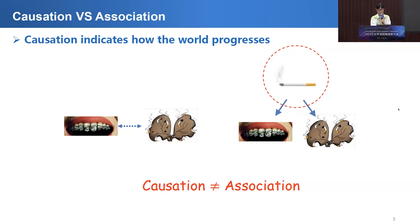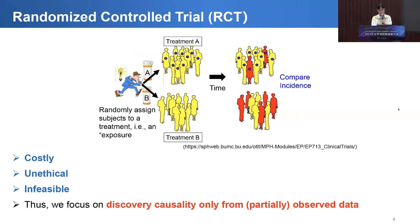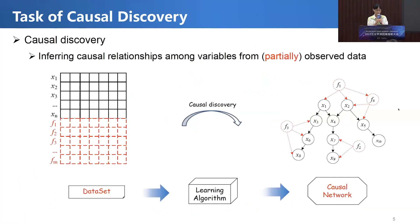But there is no causal relationship between yellow teeth and lung cancer. So how do we recover these causal relationships? The gold standard is randomized controlled trial. But as the previous speaker mentioned, RCT is costly and often infeasible. Thus we focus on causal discovery only from partially observed data — we try to find a causal discovery algorithm to infer causal relationships among variables from partially observed data.